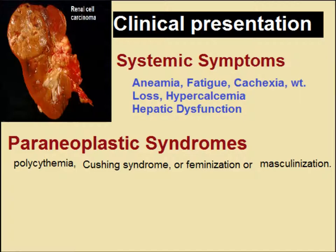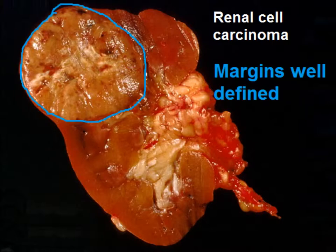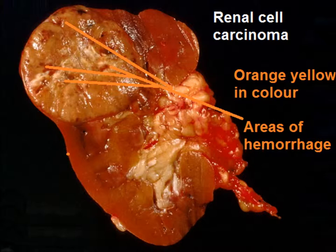Systemic symptoms may include anemia, fatigue, cachexia, weight loss, hypercalcemia, and hepatic dysfunction. The tumor may also present with paraneoplastic syndrome. Renal cell carcinoma is a solitary, single mass in one of the poles. It is well-defined, usually encapsulated, spherical, and large — typically six to eight centimeters in diameter.